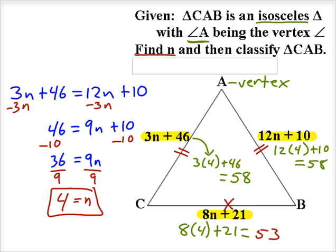And so therefore when we classify this triangle CAB, all we know is triangle CAB is isosceles.